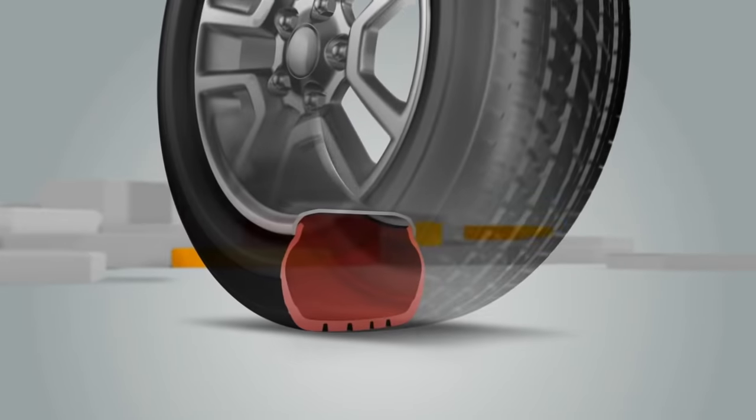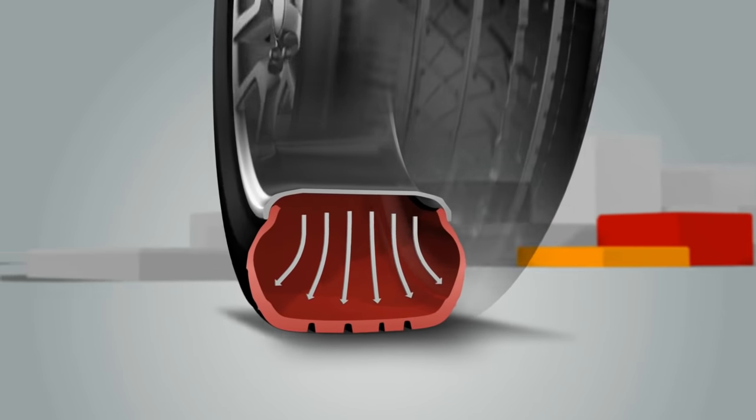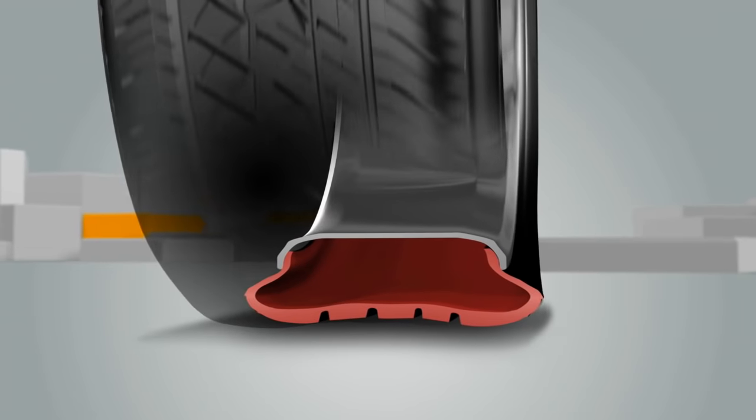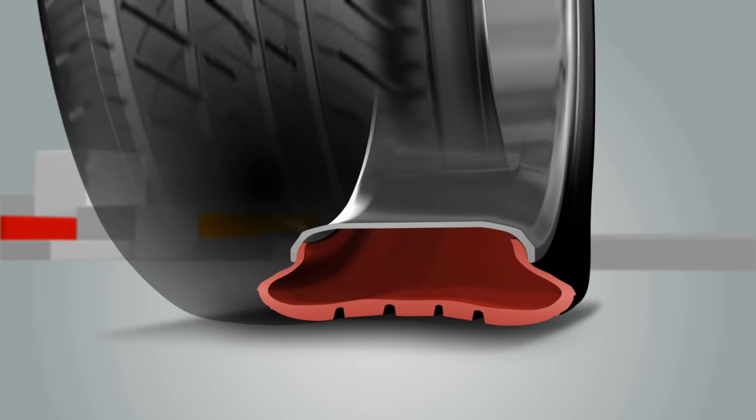Conventional tires use pressurized air to support the weight of your vehicle. But when the tire is punctured, air escapes and the weight of your vehicle is no longer supported. This creates a flat tire.